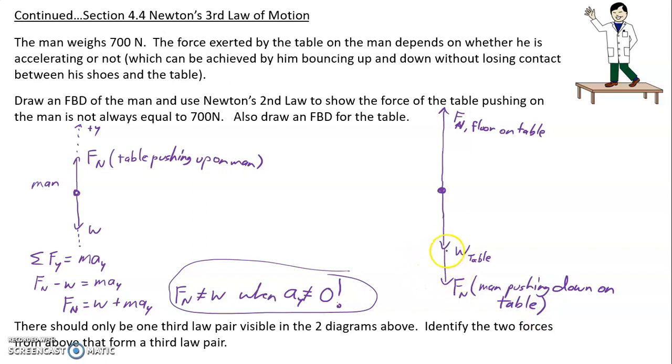Now you think, oh, couldn't we just put the man's weight here? Well, we could if the acceleration were equal to zero. But anytime the acceleration is not equal to zero, then the normal force and weight are not the same. So he will push down on the table with different amounts of force depending on what he's doing.